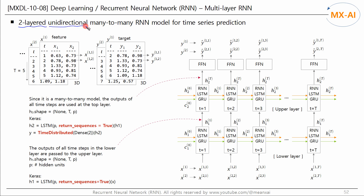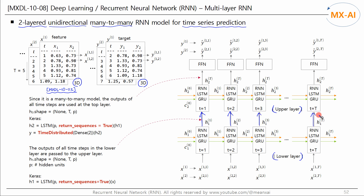Next, let's look at a two-layered unidirectional many-to-many RNN model for time series prediction. The dataset used in the many-to-many model — please refer to the second video in this series for how to construct it — has both feature X and target Y as three-dimensional. This model also has two recurrent layers, lower and upper. The outputs of all time steps in the lower layer are passed to the upper layer, and the outputs of all time steps in the upper layer are also passed to the output layer. When creating both layers in Keras, you must set the return_sequences argument to true. When creating the output layer, you need to use the TimeDistributed class to connect the feedforward network at each time step.